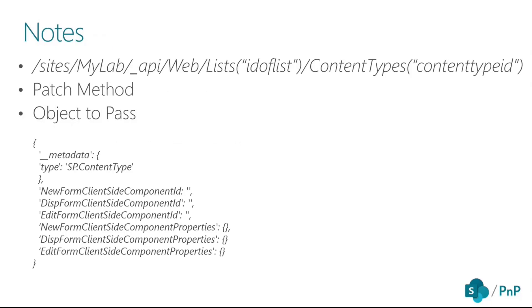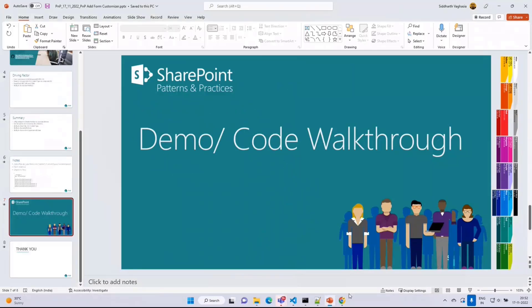There is an ability to select site, list, and content type via dropdown, so you don't have to manually enter names. It also has the capability to remove the form customizer so that the list can go back to default out-of-the-box forms. A quick technical note: the crux of the web part is that it makes a REST API call to update the content type property of a particular list. The association of the form customizer extension needs to be done via content type — with the release of the form customizer extension, we got six new properties for associating a component with a content type. We make a PATCH request passing new form client-side component ID, display form client-side component ID, edit form client-side component ID, and associated properties.